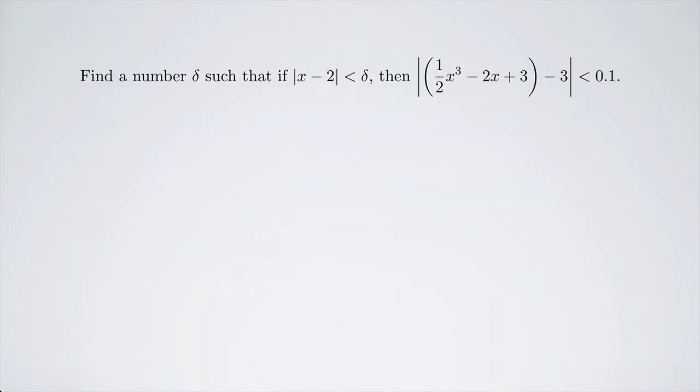For the next part, we want to find a number delta such that we have the distance between x and 2. Remember that when you have the absolute value of two things subtracted, it's the distance between them. So we want the distance between x and 2 to be less than this number delta. And if that's true, then we want this expression, which is also a distance—remember this first thing here was our f(x)—and then we want the distance between f(x) and 3 to be less than 0.1.